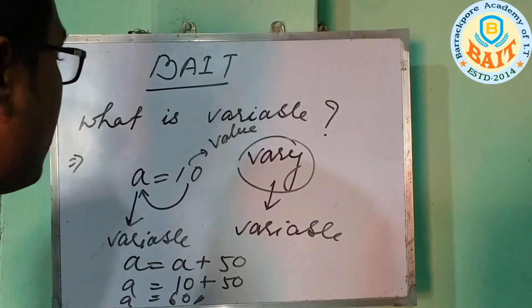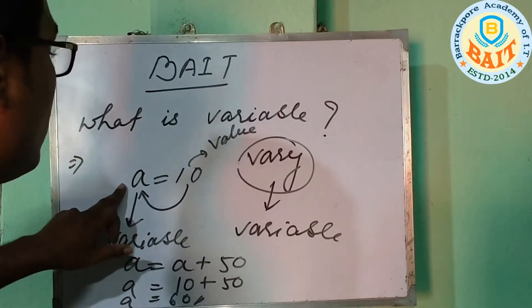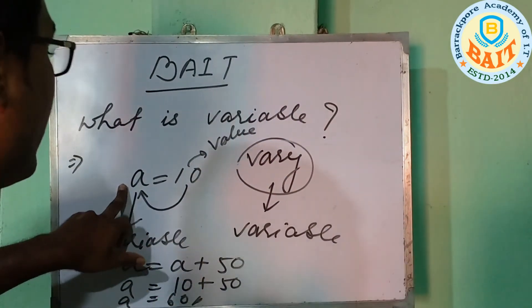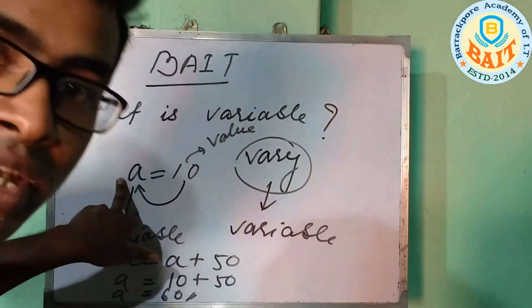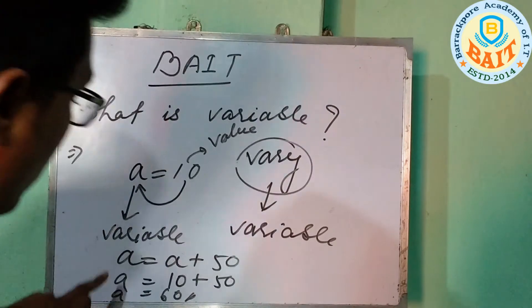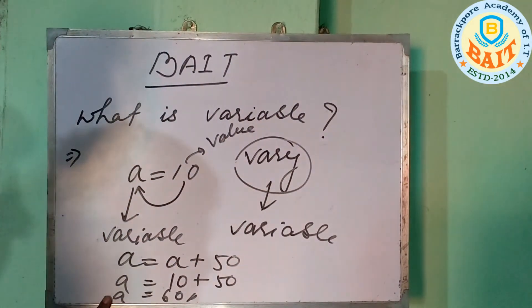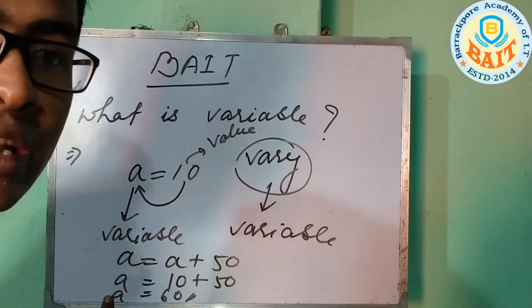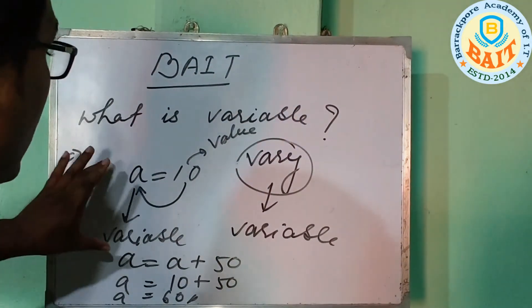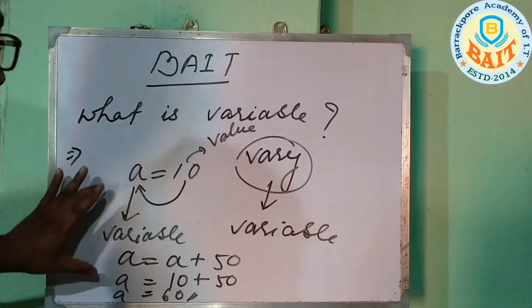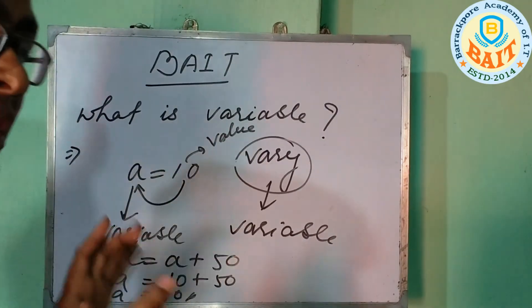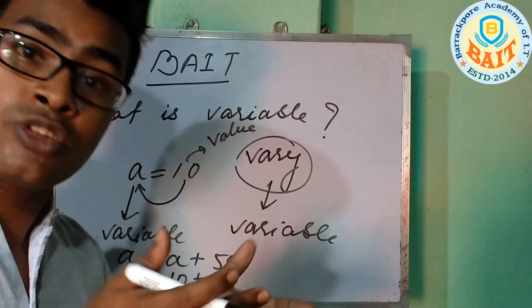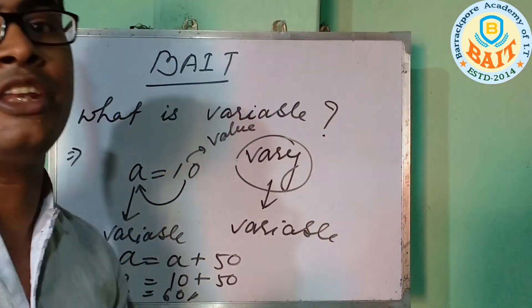Here, we first assigned a equal to 10, and then the value of a became 60. So at different times, different values can be stored in a variable.